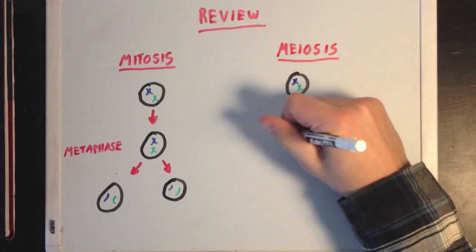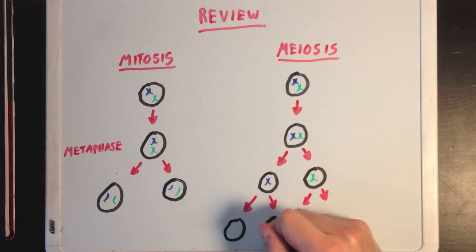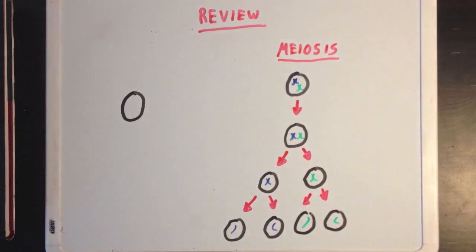During meiosis, diploid cells will divide twice into four haploid gametes, each with half the normal amount of DNA. Of these gametes, half will contain the paternal copy of a given chromosome, and half will contain the maternal copy.